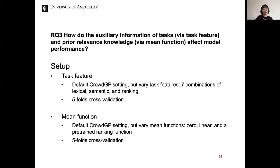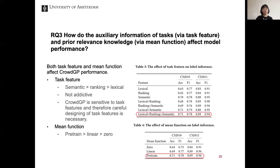The third research question is how auxiliary task information and prior relevance knowledge affect model performance. Using the default CrowdGP setting while varying task features and mean functions, Tables 3 and 4 show that both affect performance. Semantics outperforms ranking, which outperforms lexical features, though these features are not additive. CrowdGP is sensitive to task features, so careful design is necessary. A pre-trained ranking function as mean function significantly improves GP performance.